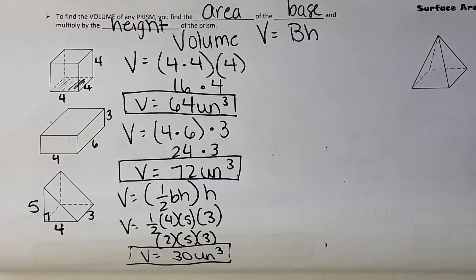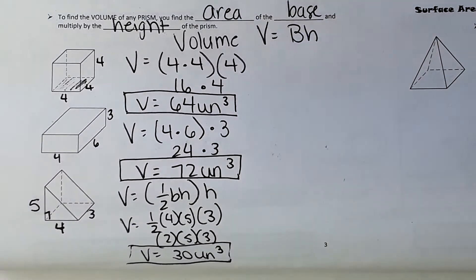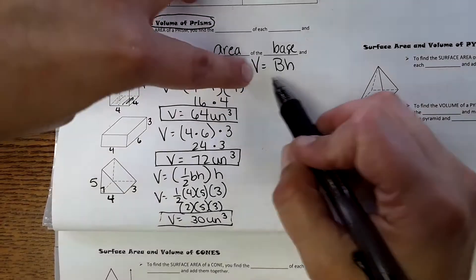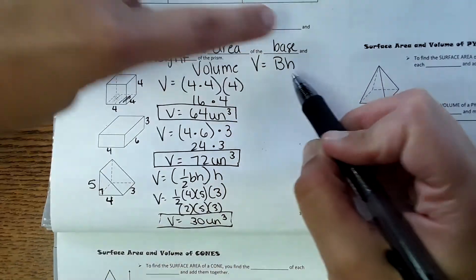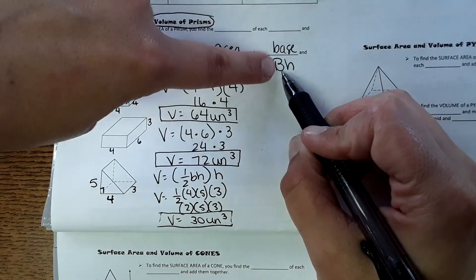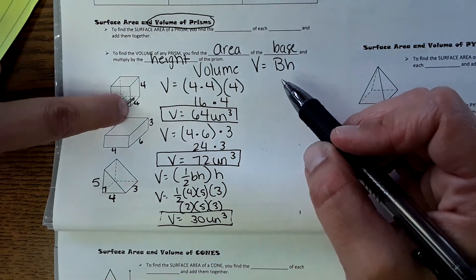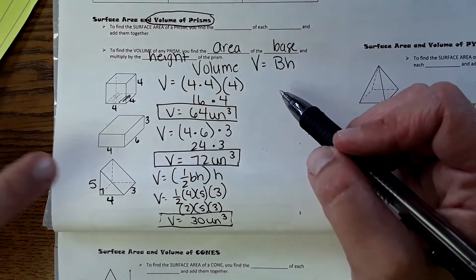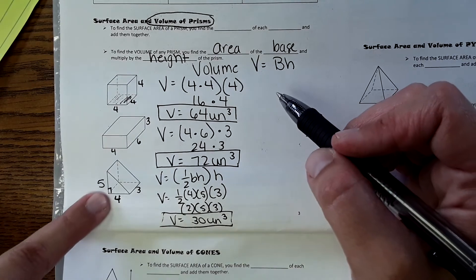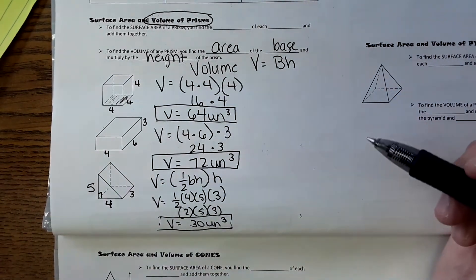The equation used for all prisms and cylinders is: area of the base × height. This changes based on the shape of the base — for a square it's side², for a rectangle it's length × width, and for a triangle we plug in the triangle area formula.